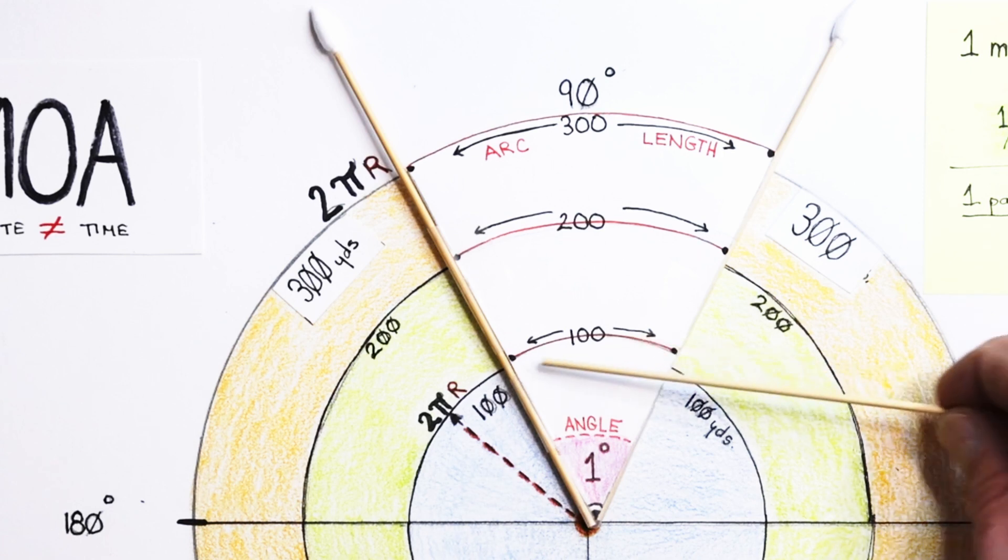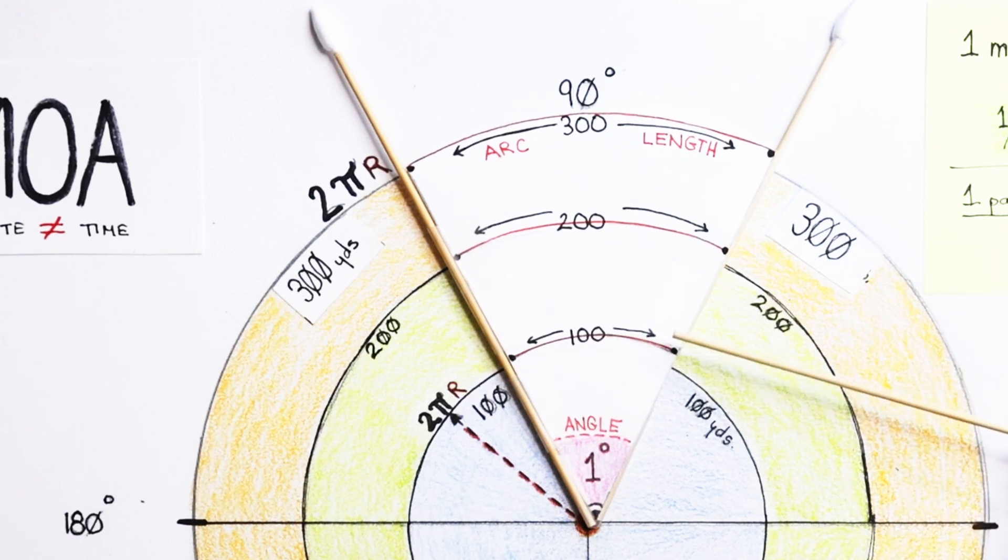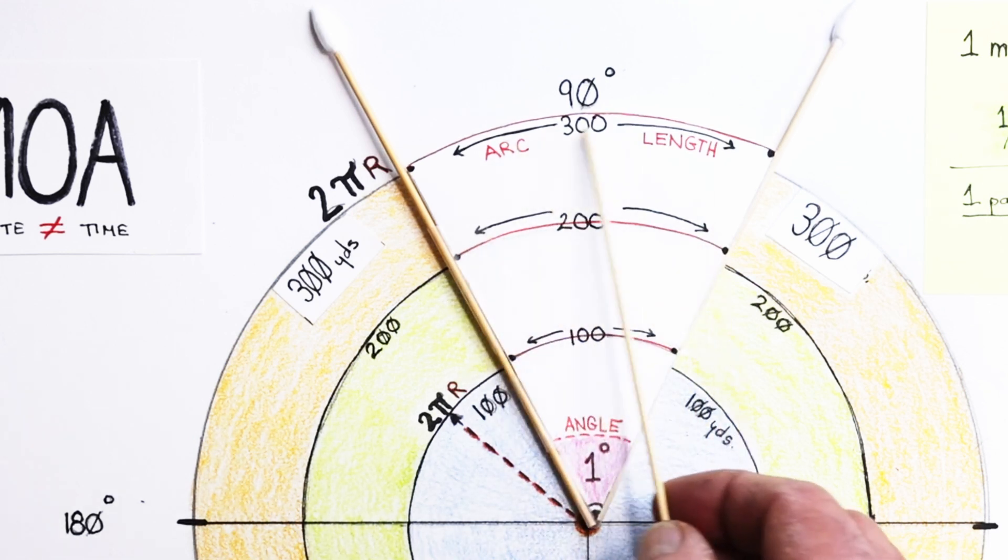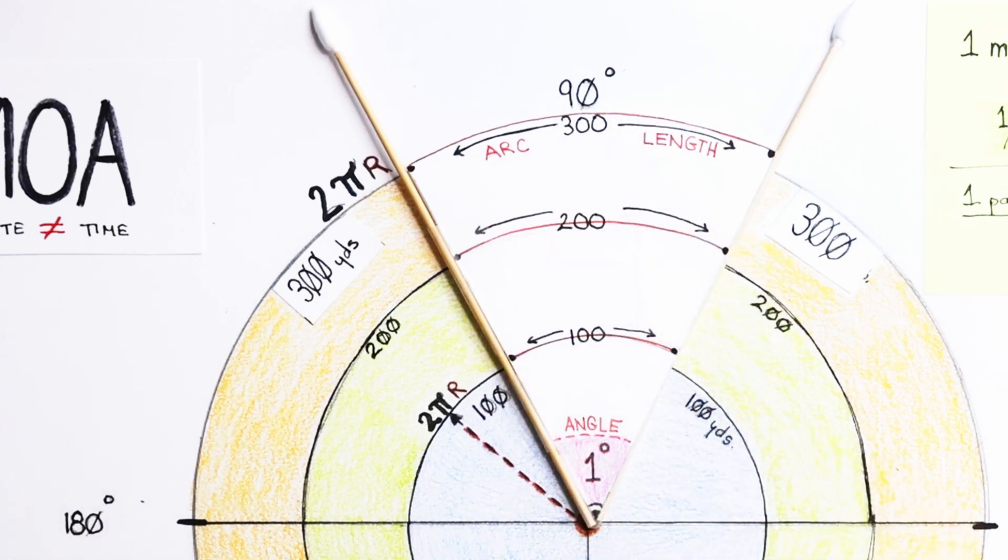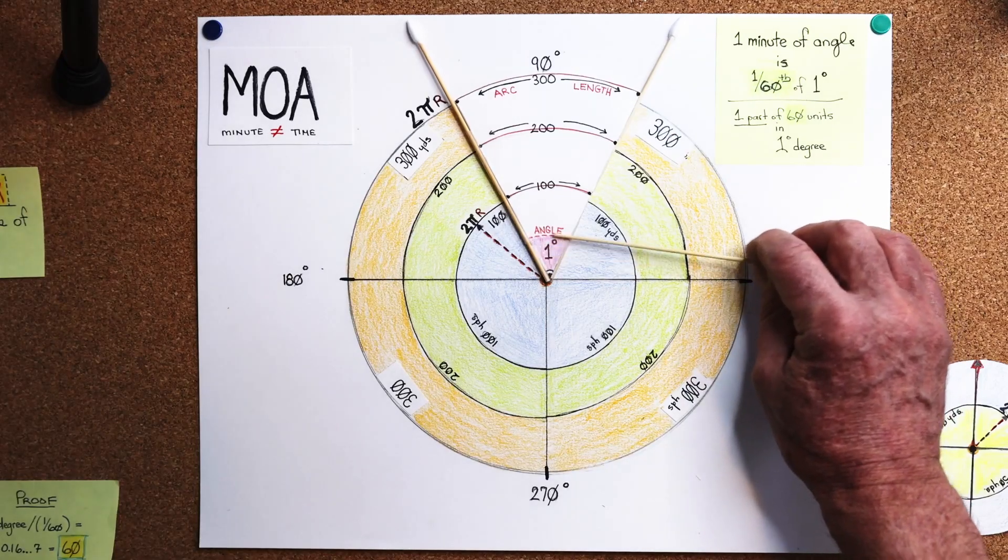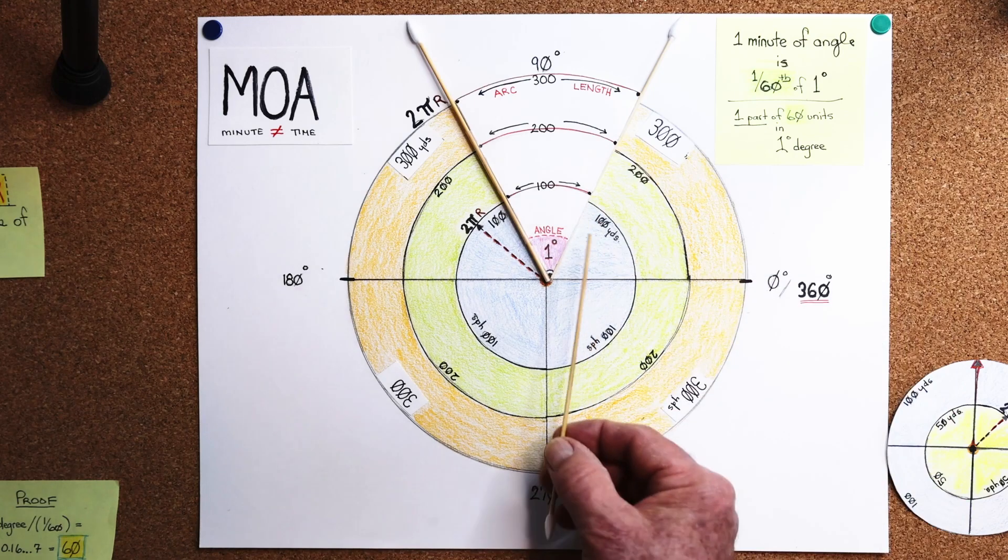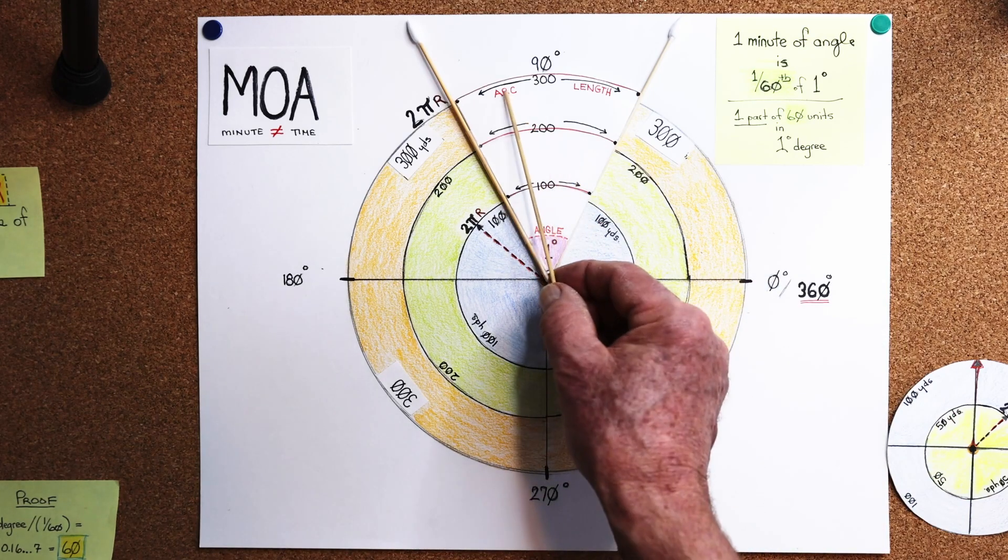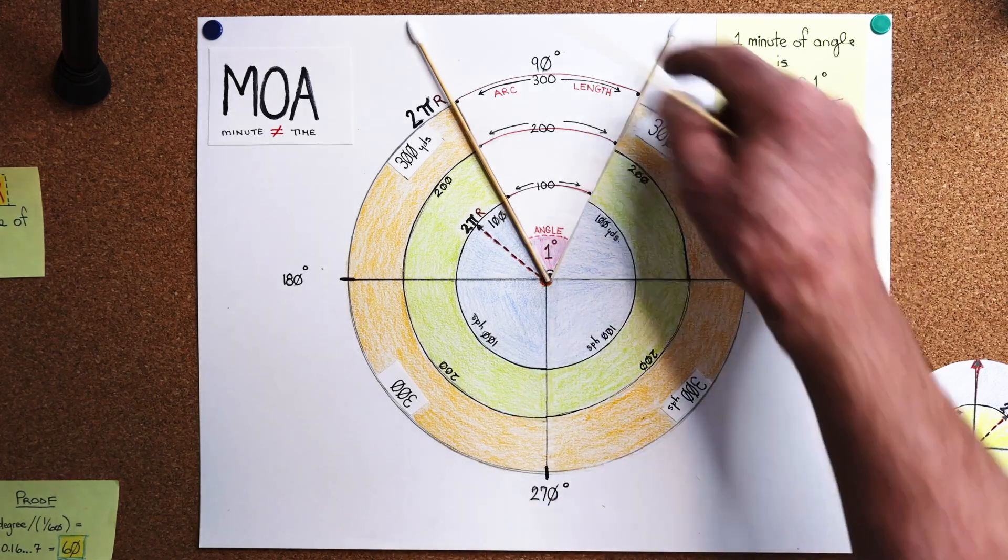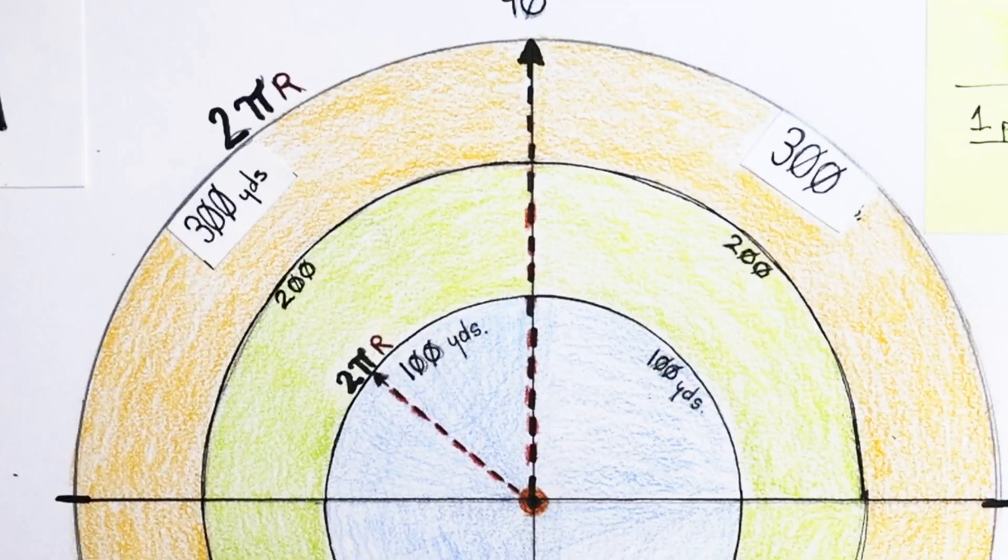So here's what they call the arc length of 100. Here is a representation of the arc length of 200. You'll see it's wider, and you'll see the arc length for 300 yards is out here. And this, again, is 1 degree, and this 1 degree is actually an angle, and it creates this arc length up here. So I'm going to remove that. Why is that so important?